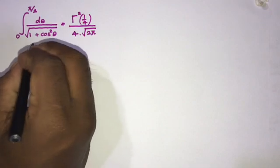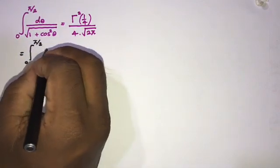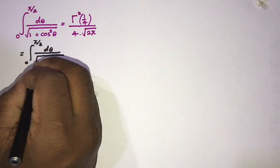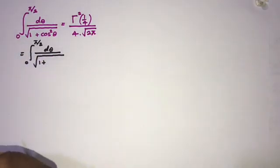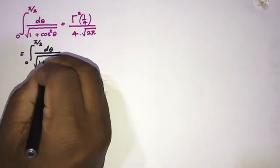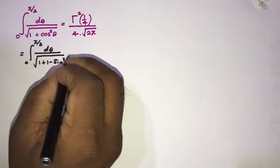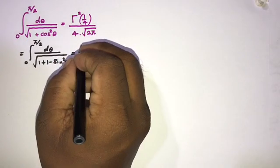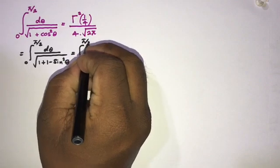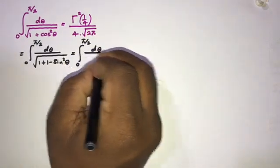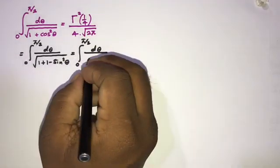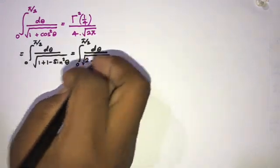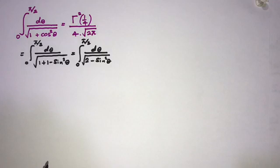We can write this as the integral from 0 to π/2 of dθ over √(1 + cos²θ). We know that cos²θ equals 1 minus sin²θ, so substituting that in. Then we can write this as the integral from 0 to π/2 of dθ over √(2 minus sin²θ).